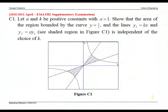This is a problem on finding areas. Pause the video to read the question. We are asked to find the area of the region bounded by the curve and the lines Y1 and Y2, and show that this is independent of the choice of K.